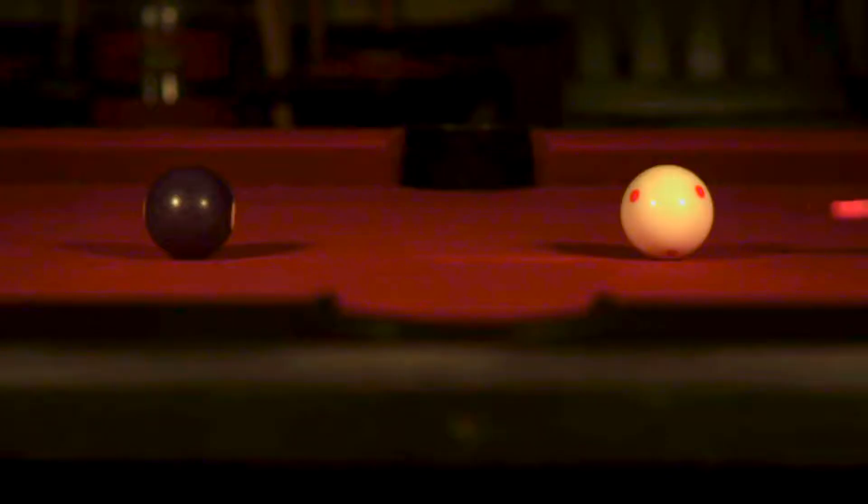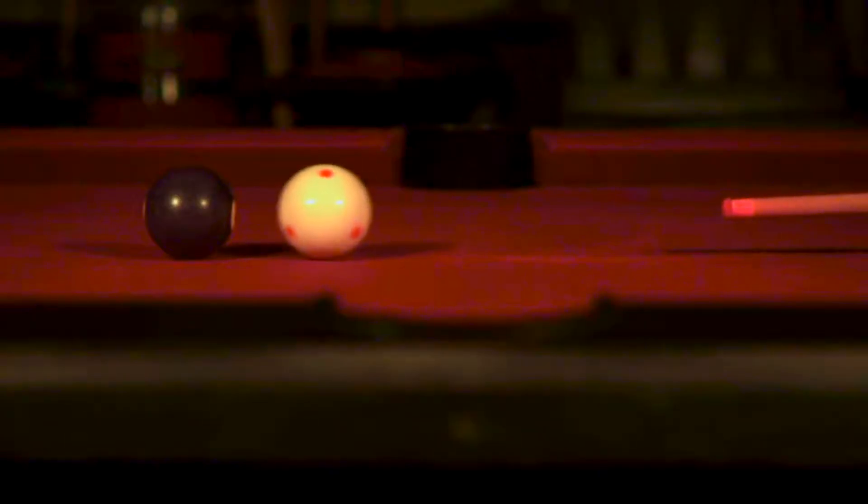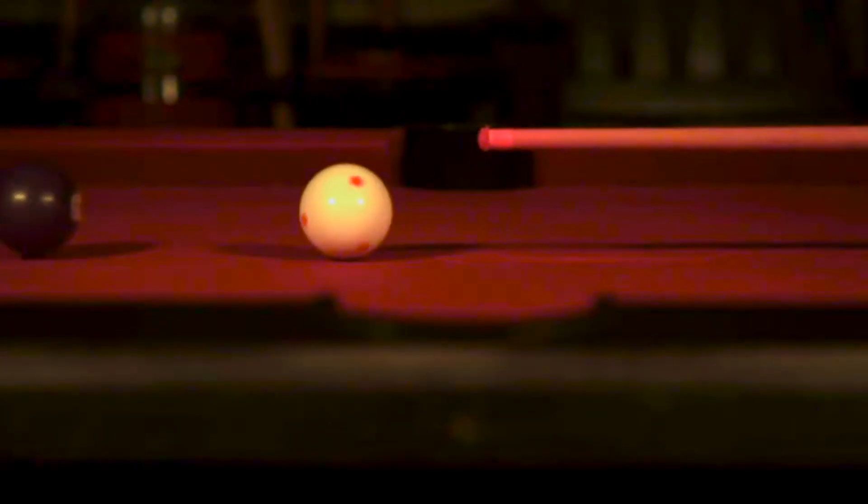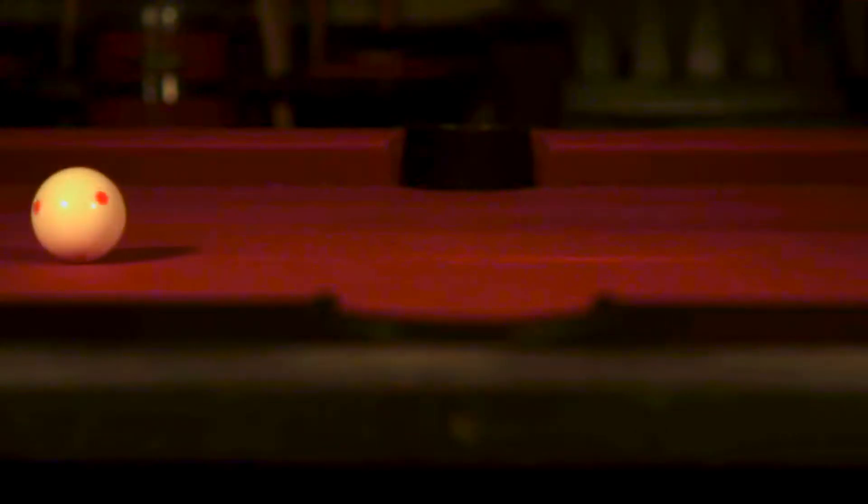If we instead strike the cue ball right in the center, the result is a stun shot. Notice how very little spin is imparted to the cue ball now, which stops dead in its tracks after the collision. A follow shot is accomplished by striking the cue ball above center, imparting topspin in the process. Once again, the cue ball maintains this spin after the collision, and eventually follows after the ball that was just hit.